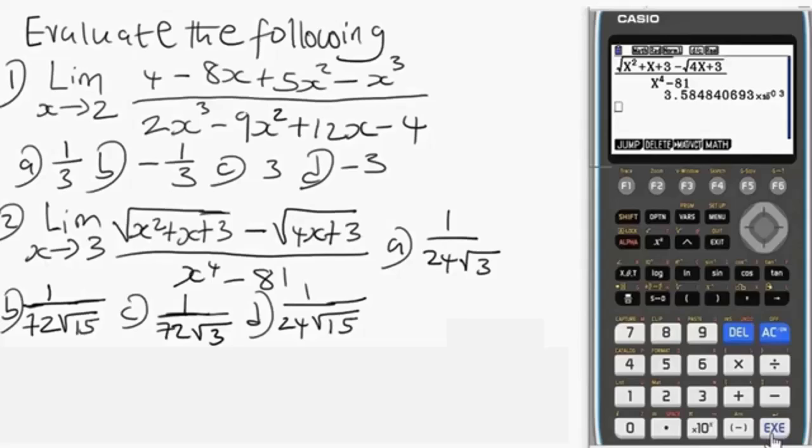So what do we have here? We have 3.58 times 10 to the power minus 03, that's 0.003. Let's see what we're going to do. We're going to evaluate the options we have. We want to get 3.58 times 10 to the power minus 03.